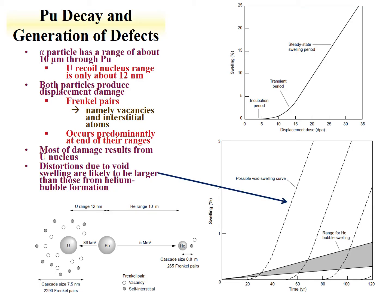One of the properties of this is that you get, over time, swelling — a void swelling curve. The properties of this void swelling curve show ranges attributable to the uranium recoil and a range for swelling due to the helium. As we see, the helium, while it does contribute, does not seem to contribute as much as the void swelling from uranium recoil.